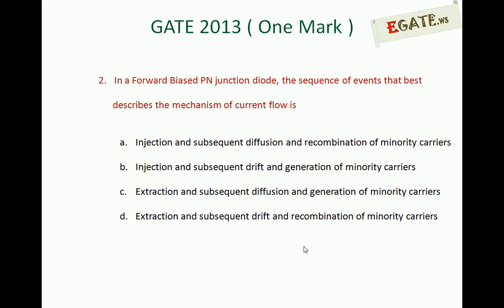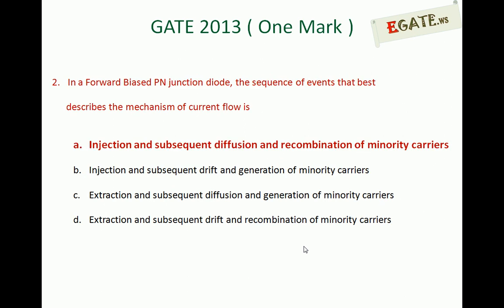The question asks: in a forward biased p-n junction diode, the sequence of events that best describes the mechanism of current flow. The correct option for this question is (a): injection, subsequent diffusion, and recombination of minority carriers.